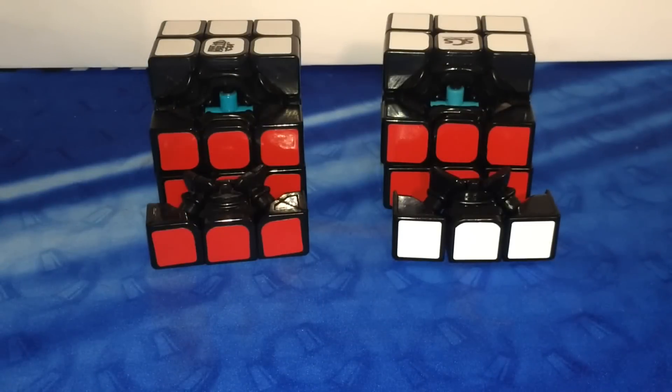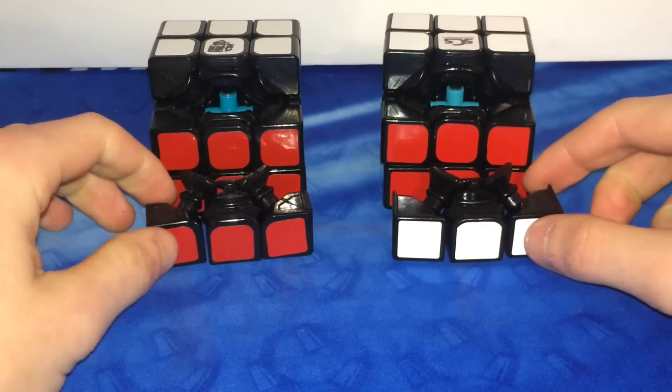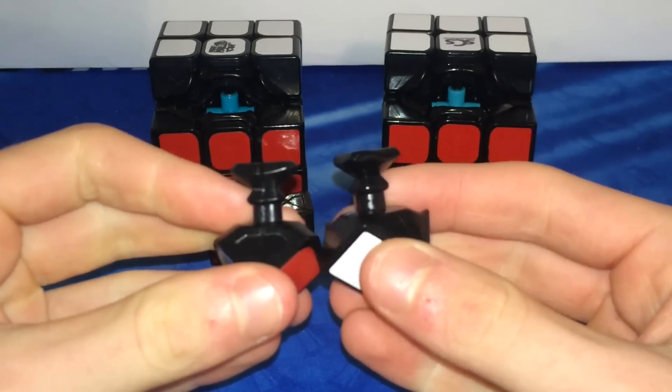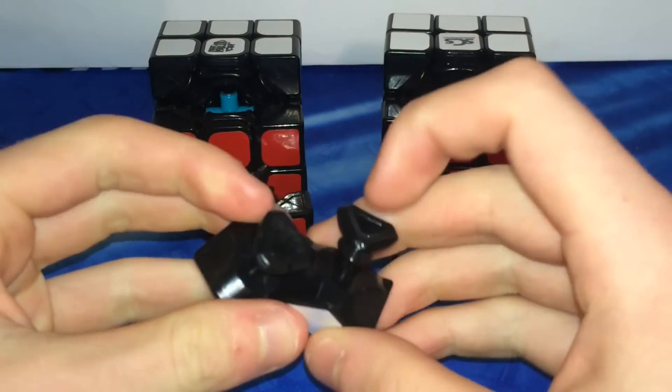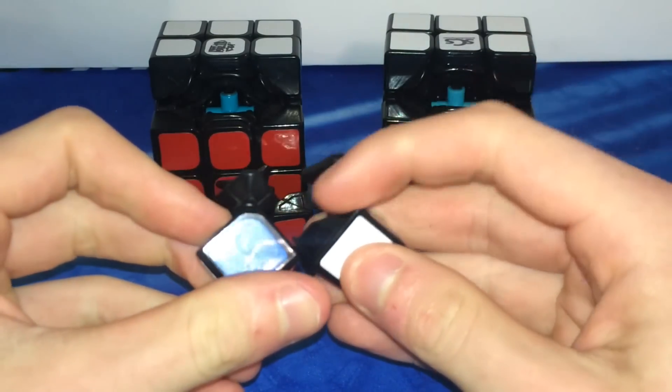When we take a look at this puzzle's mechanism, we find that it is almost identical to the Moyu Aolong version 2. Taking a look at the corners, the GT here has basically two differences. The hollowed out base of the corner here is different and the sharpened off corners, obviously.